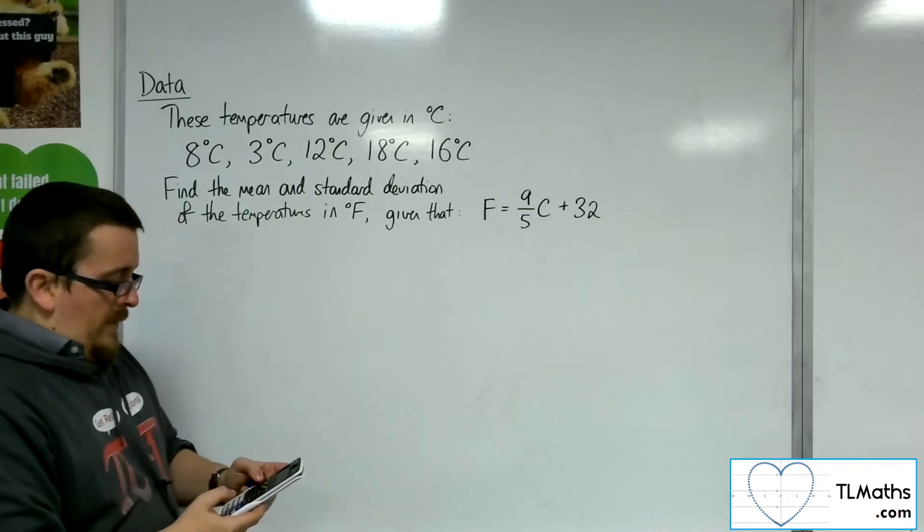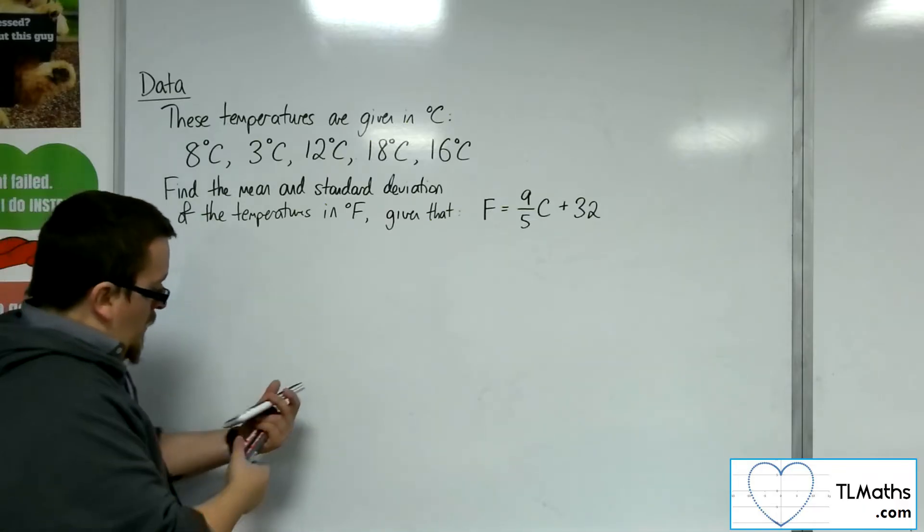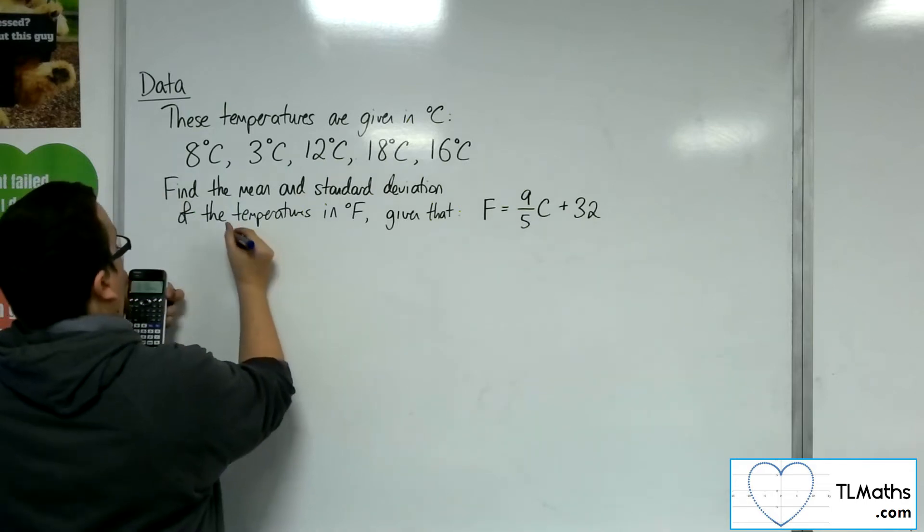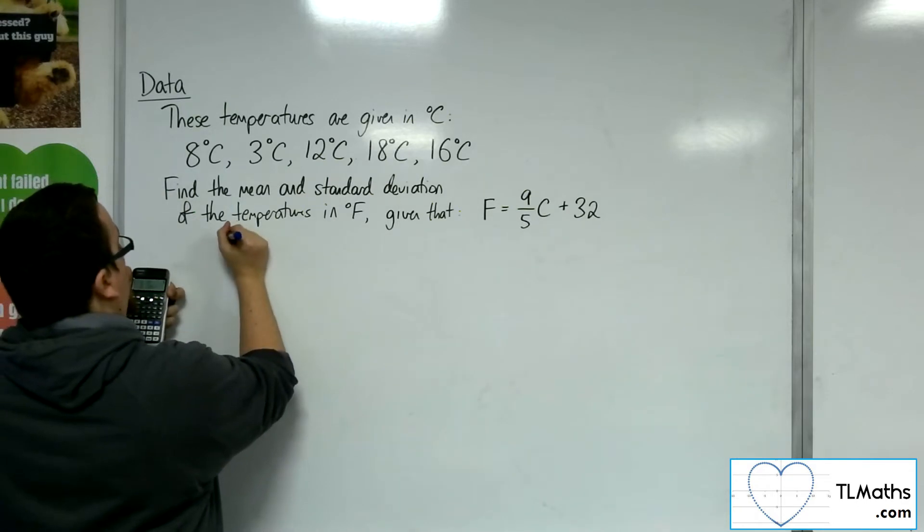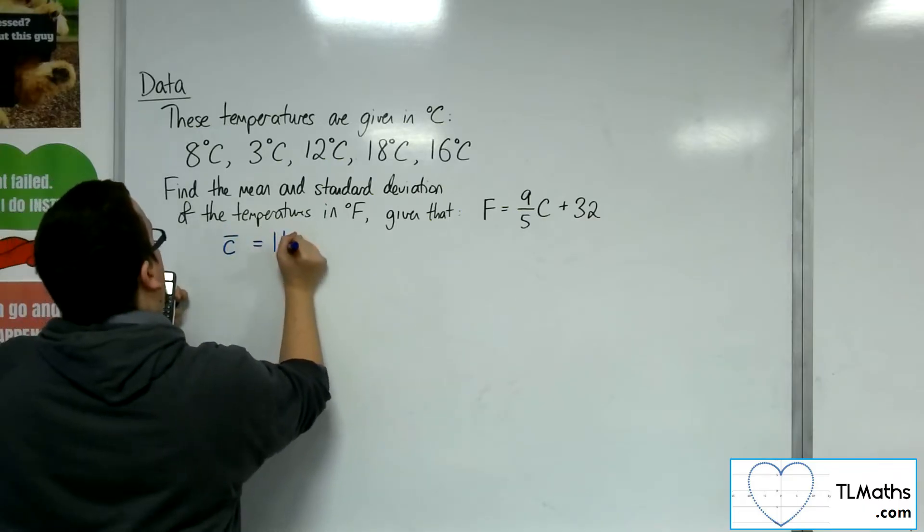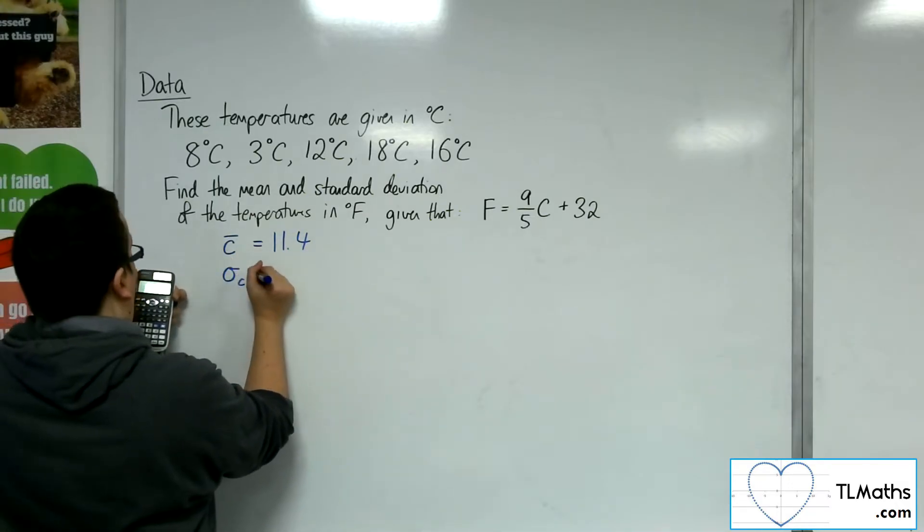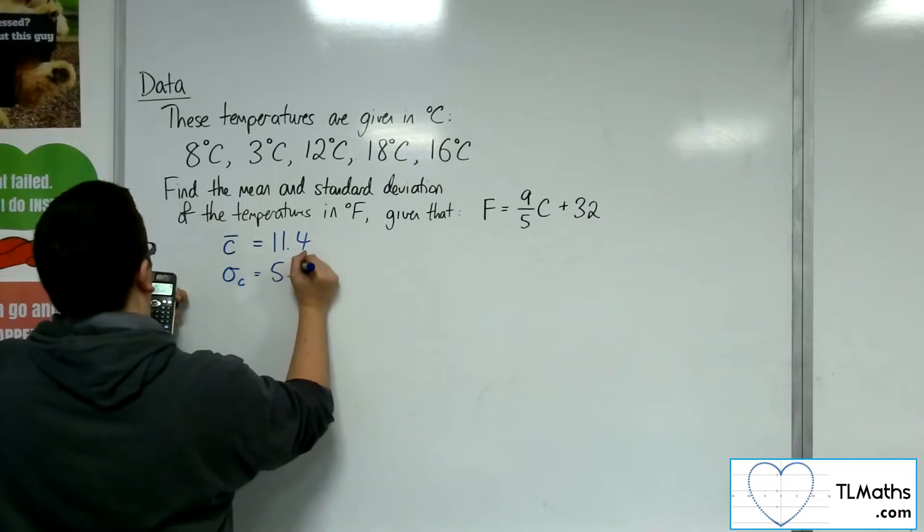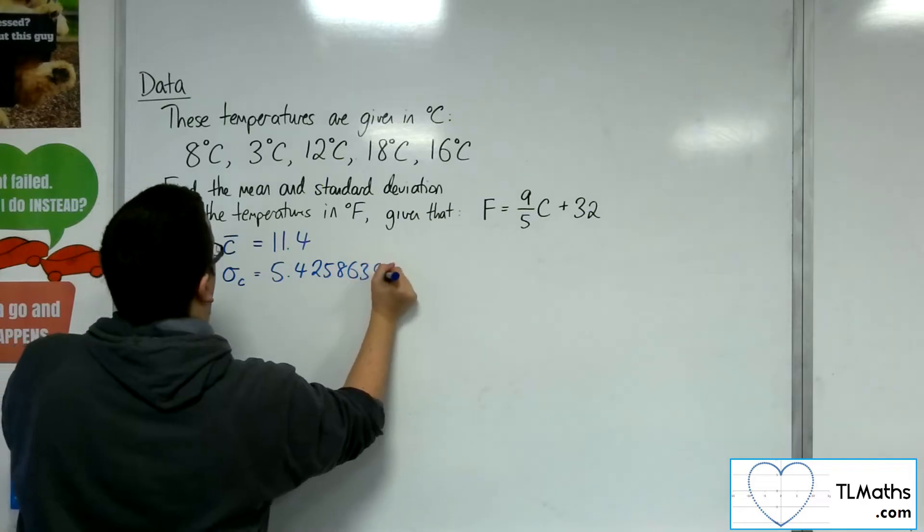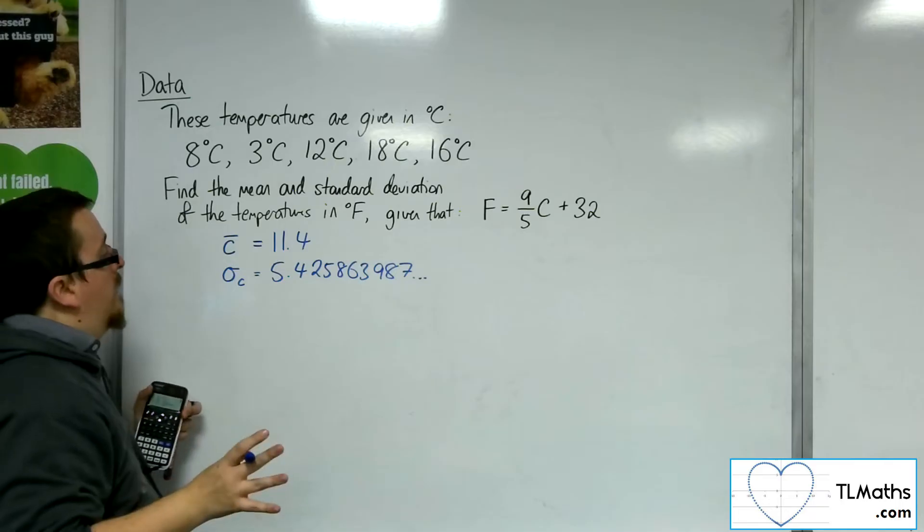So then AC, option number 2, or option number 3, and we get, so the original set of data, let's call it C bar, the mean in centigrade, is equal to 11.4. And the standard deviation in centigrade is 5.425863987. I'm just going to use the full calculator display.